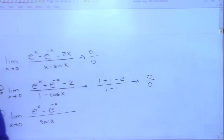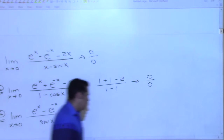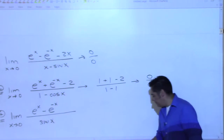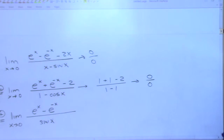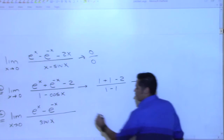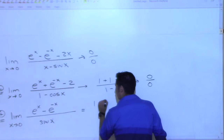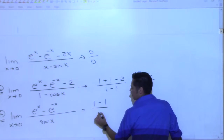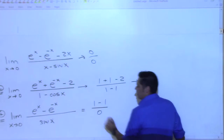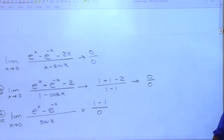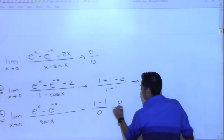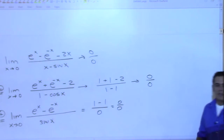Everyone good with that? Alberto is going to tell us the limit. Top: e to the zero is one, minus e to the zero is one again — one minus one is zero. Crap. On the bottom, cosine of zero is one, so we get one at the bottom — wait, zero again. So we get zero over zero again.